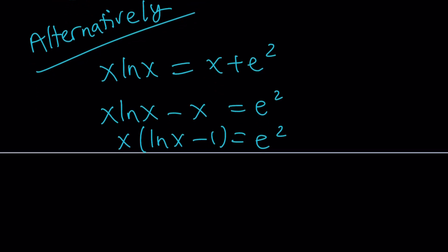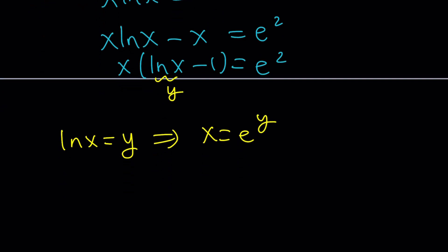And then I'm going to do the following. Substitution. I want to replace ln x with y. ln x equals y. And then from here, x becomes e to the power y. So we get e to the y times y minus 1 equals e squared. Now take a look at this equation. Take a good look.